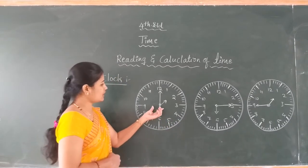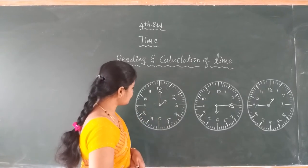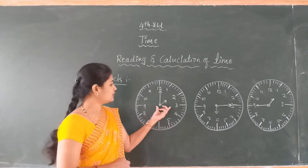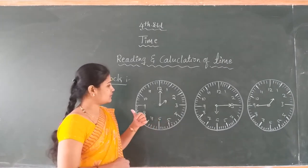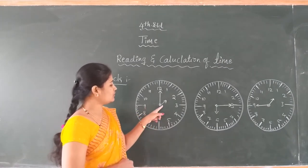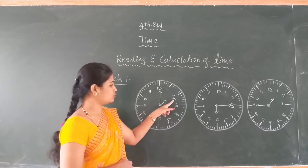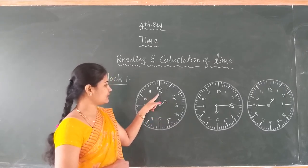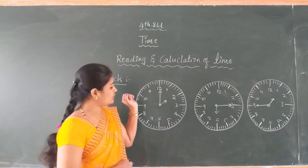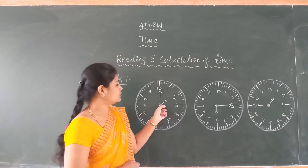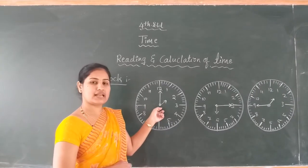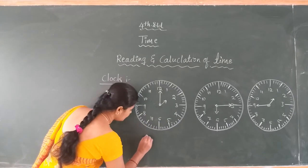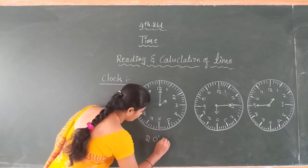The three clocks have different time measurements. Dear student, what is the time in the first clock? The short hand is at 2 and the long hand (minute hand) is at 12. So what is the time in this clock? It is 2 o'clock. Dear student, it is 2 o'clock.